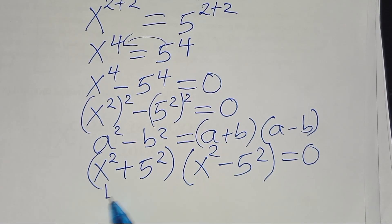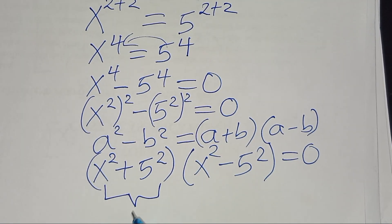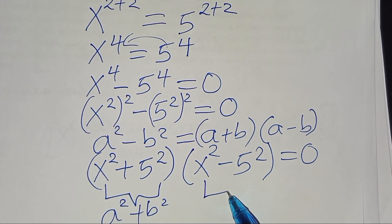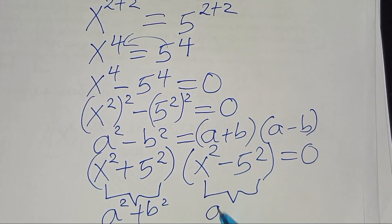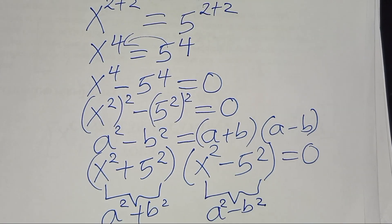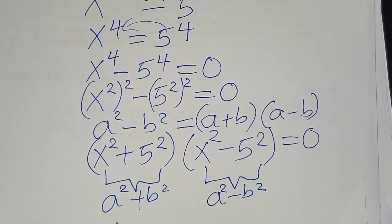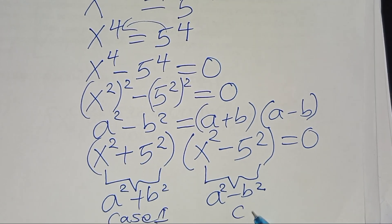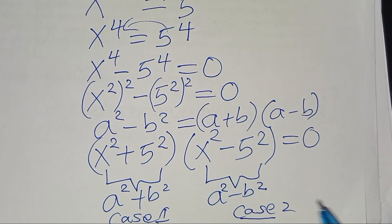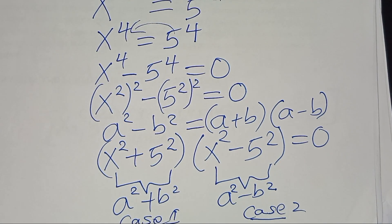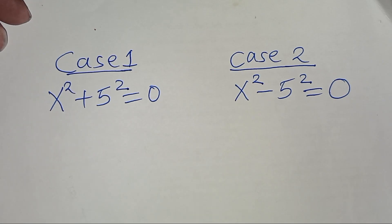This means we have two parts: the first part is in the form of a squared plus b squared, and the second part is in the form of a squared minus b squared. Let's call this Case 1 and this Case 2.